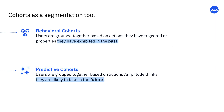Related to behavioral cohorts is the idea of predictive cohorts. Behavioral cohorts group users together based on actions they have triggered or properties they have exhibited in the past. Predictive cohorts group users together based on actions Amplitude predicts they will take in the future. We'll be covering predictions later in this course, but for now just keep in mind that conceptually they function similarly to behavioral cohorts.